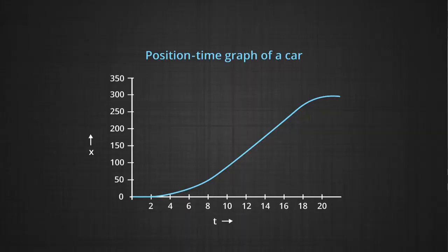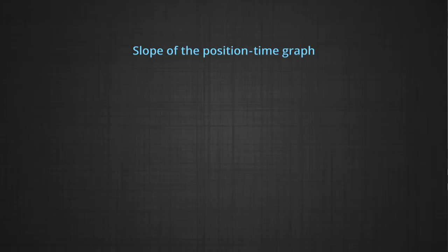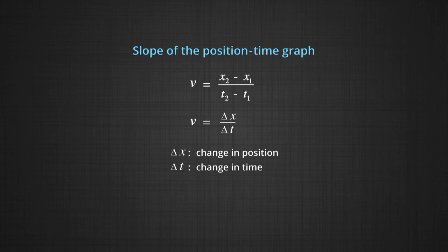As demonstrated with the car example, we drew the position time graph and the velocity time graph together to show how motion can be read at a glance. The slope of the position time graph at a point is given as (x₂ − x₁) / (t₂ − t₁), so velocity is defined as the rate of change of position: Δx / Δt.